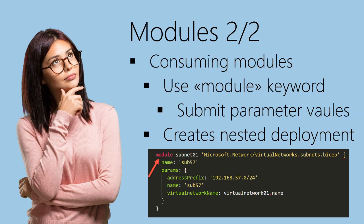To consume a module, you use the module keyword. Instead of deploying a resource, you use the module keyword saying you want to use code that lives in some other Bicep file. You need to assign an identifier to your consumed module, then define where your Bicep file actually is. In this case, it's just a module that deploys a single subnet. Then, depending on the module you're consuming, you need to submit input parameter values — such as the name, address prefix, and virtual network name. It's the same more or less as deploying a resource, but you're deploying something you prepared in your own Bicep file.